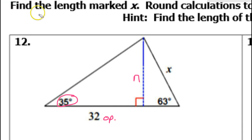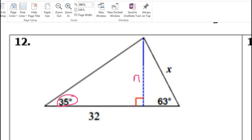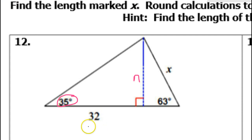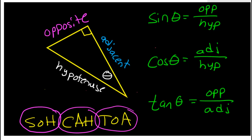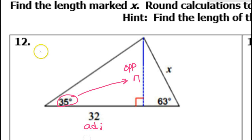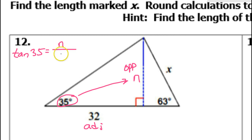This is the adjacent leg because it's right next to the 35, so that makes it adjacent to the 35. The N is the opposite leg because of the way it is across from the 35. So we've got opposite and adjacent. Which trig function is that? That's the tangent function — tangent is opposite over adjacent. So we will say the tangent of 35 is equal to N over 32.